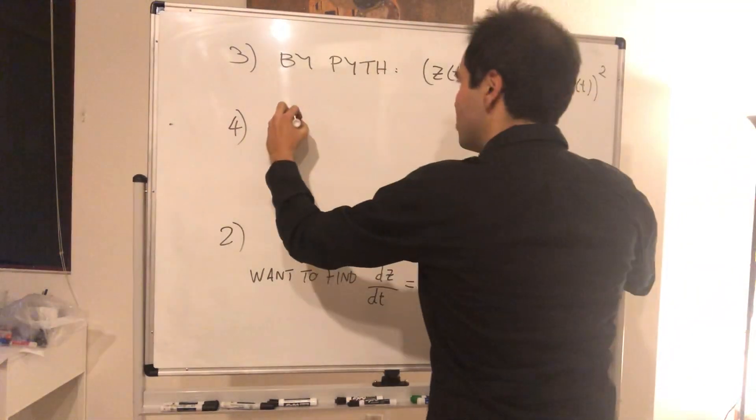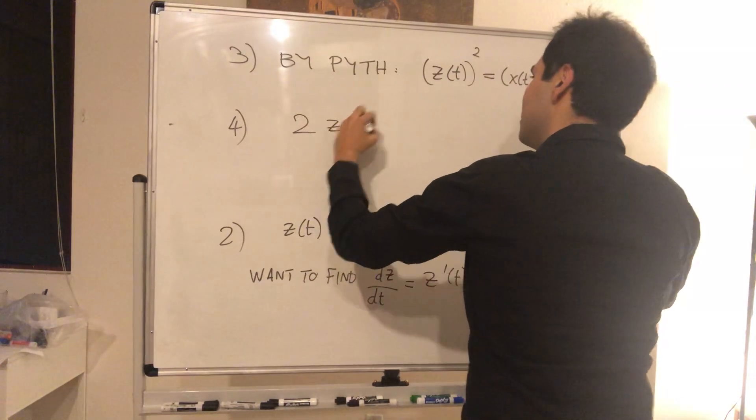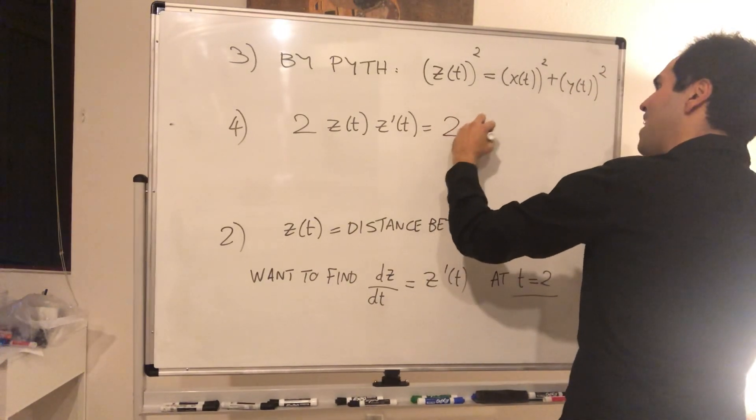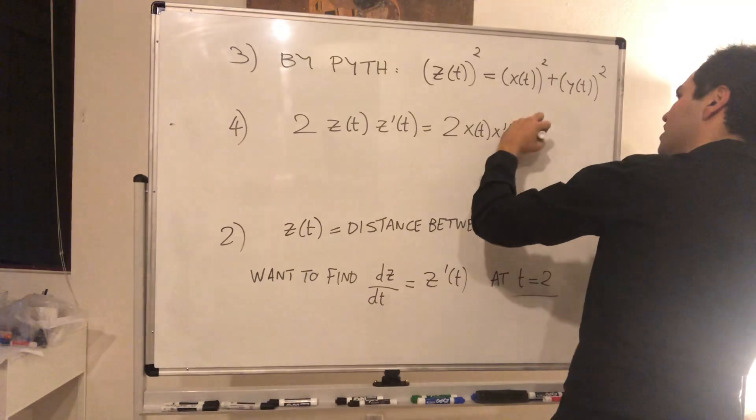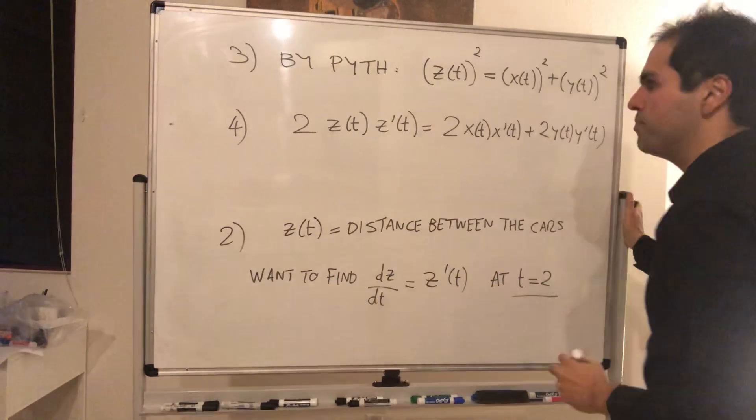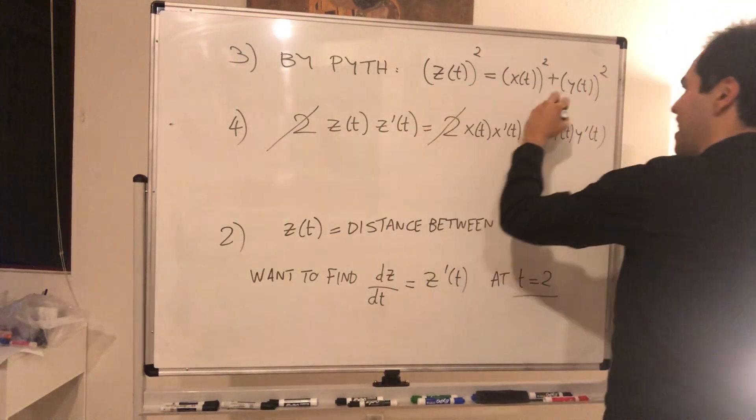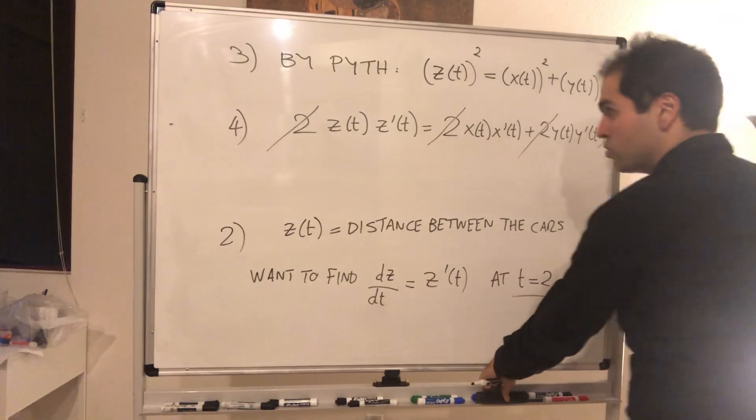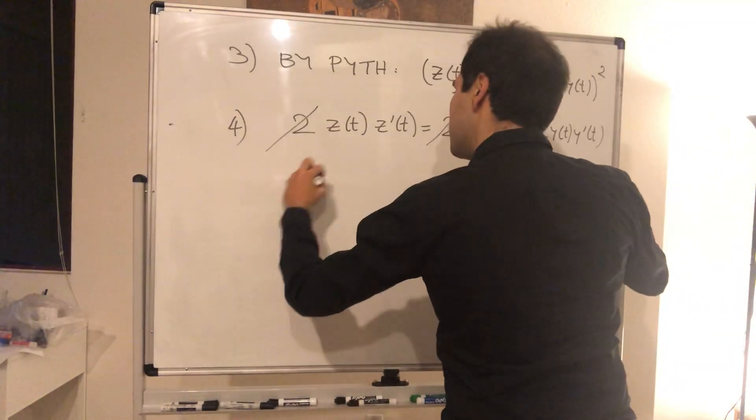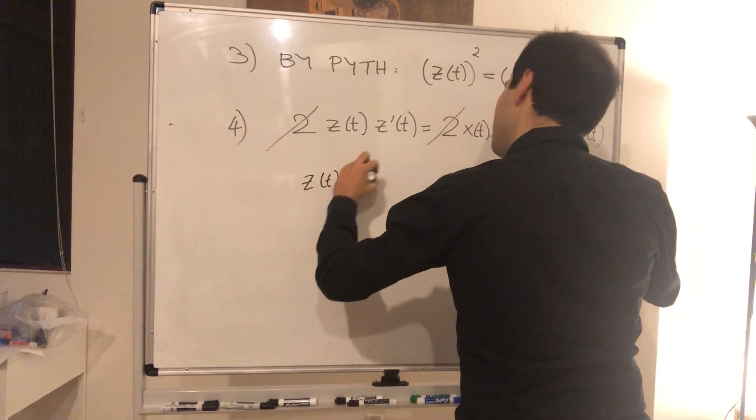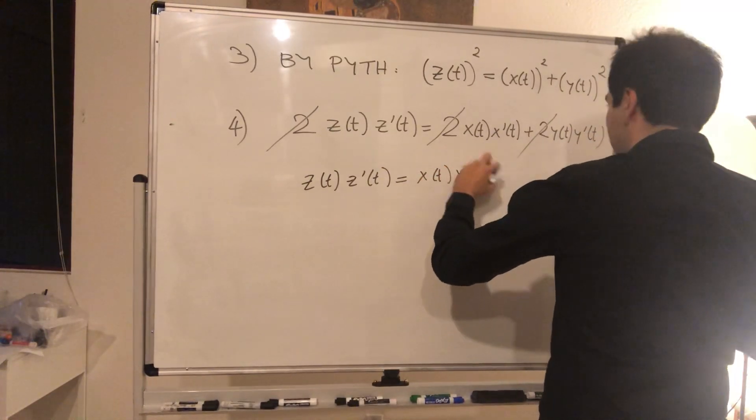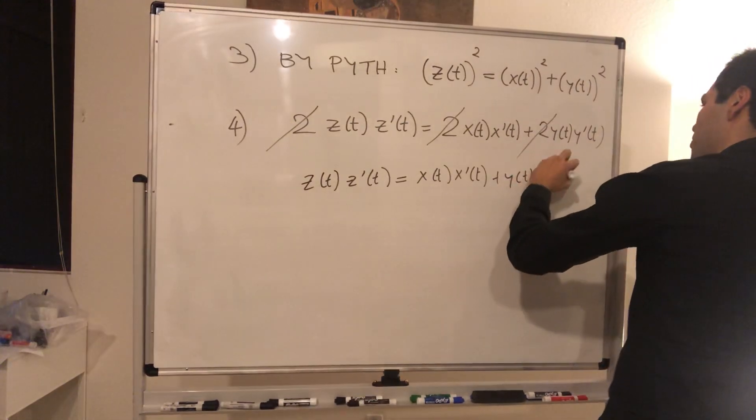And then remember, the next step is simply to differentiate everything. So in other words, two z of t times z prime of t, using the chain rule, it's two x of t x prime of t plus two y of t y prime of t. And then the nice thing is we can cancel out the twos, and then what we're left with is simply z of t z prime of t equals x of t x prime of t plus y of t y prime of t.